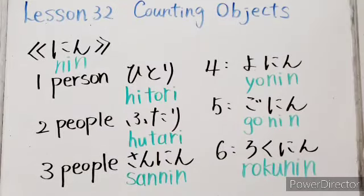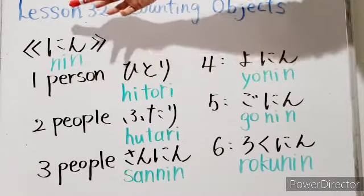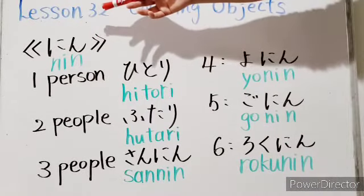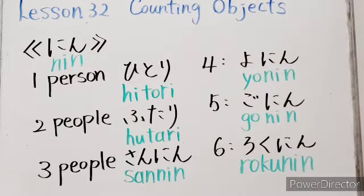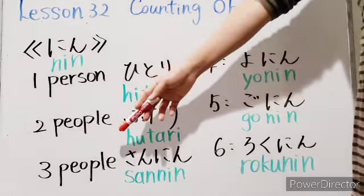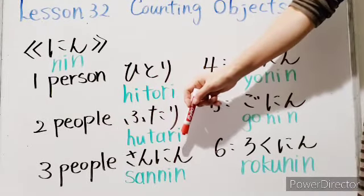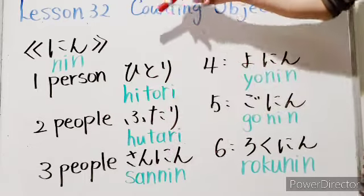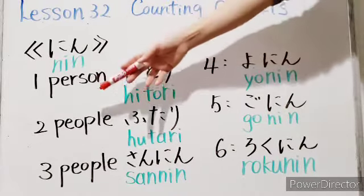First, let's learn nin. Nin can be used to count the number of people. Please take a look at it. After three people, we use nin. But we call one person hitori. Two people,